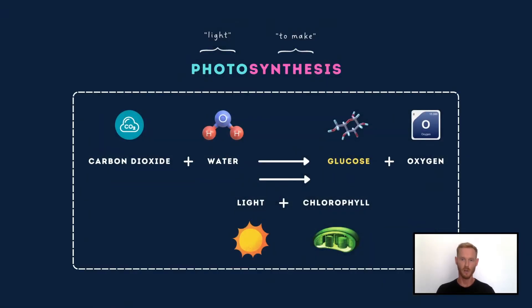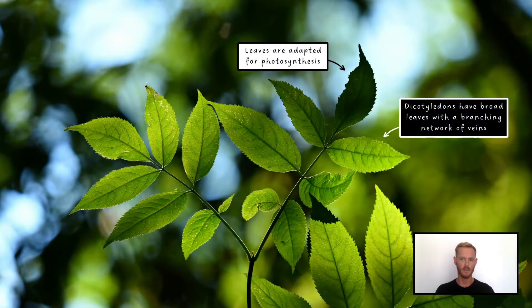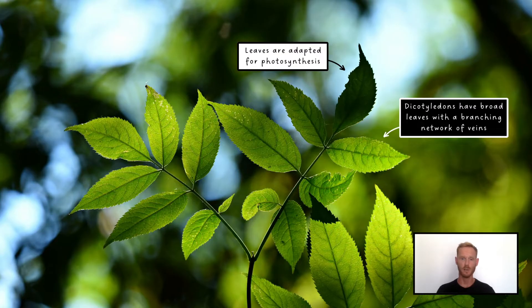In our last lesson we learned about photosynthesis, the process by which plants use light energy to produce carbohydrates. Now this mainly takes place in the chloroplasts of leaf cells, so the leaves of dicotyledonous or broad-leaved plants are specially adapted, meaning the leaf structure is perfectly suited to its role.